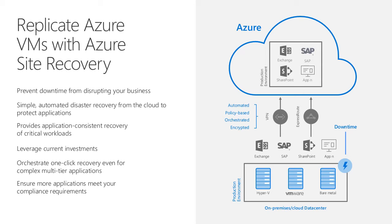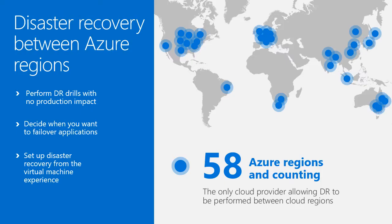You simply subscribe to Azure and use ASR to replicate your VMs from on-premises to the cloud. Whether you use Azure Site Recovery or Azure Backup, you can choose from any of the 58 different Azure regions. If you want to replicate your entire data center to, say, Western United States, you can certainly do that.